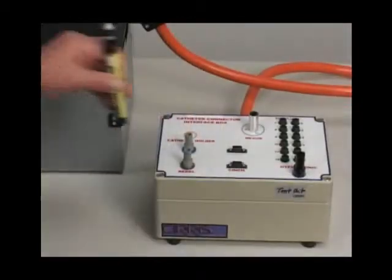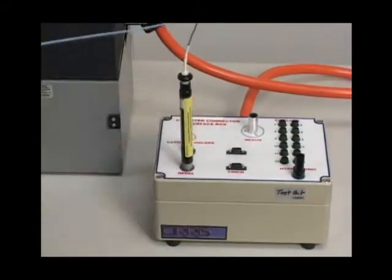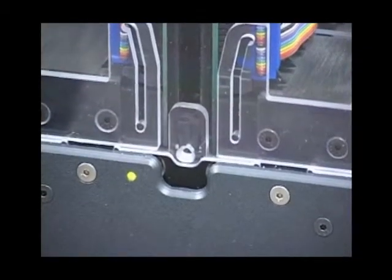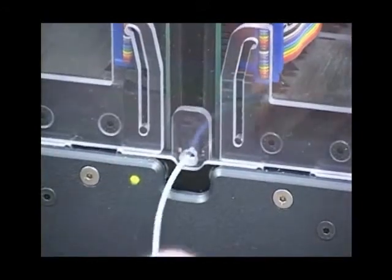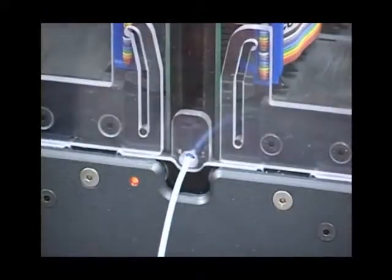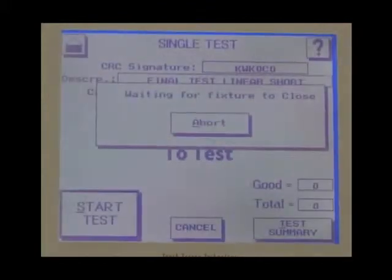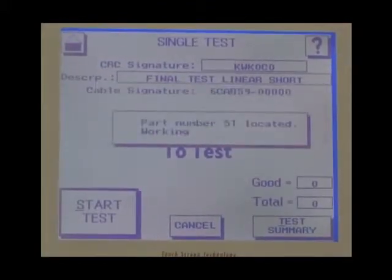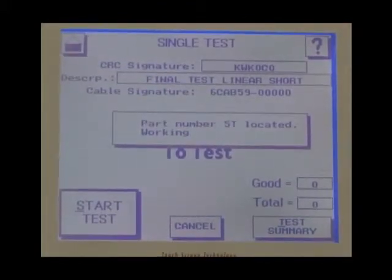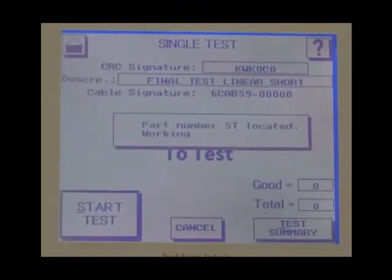To test, the operator plugs the proximal end into the fixture box, puts the distal end into the opening in the fixture, and touches the optocoupler latch switch to close the fixture. Then enters the part number of the catheter to be tested using the touchscreen display. The tester finds the rings on the catheter, then performs the test.